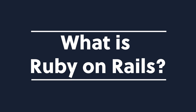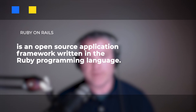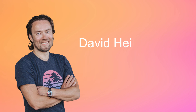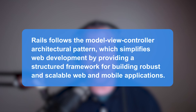First off, what is Ruby on Rails? Ruby on Rails, often simply referred to as Rails, is an open source application framework written in the Ruby programming language. It was created by David Heinemeyer Hansen in the early 2000s and has since gained widespread popularity. At a high level, Rails follows the model-view-controller architectural pattern, which simplifies web development by providing a structured framework for building robust and scalable web and mobile applications.